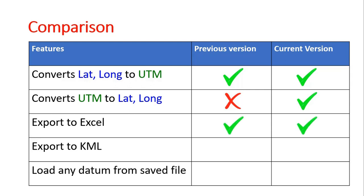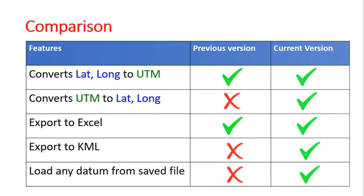Both versions export to Excel. Only the current version exports to KML. Using the current version, you can load a saved datum from a text file. In the previous version, you could not save the datum to a text file — you had to input it manually. But now, you are facilitated to input via text file.